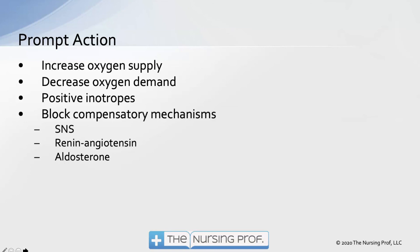We want to block the compensatory mechanisms because again, this is what's making the patient worse. For the sympathetic nervous system, that's our beta blockers. For the renin-angiotensin system, that's our ACE inhibitors and ARBs. And then blocking aldosterone with spironolactone.